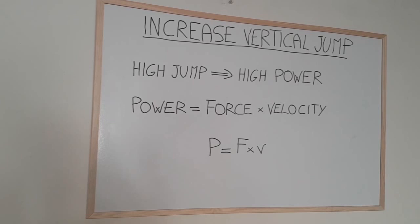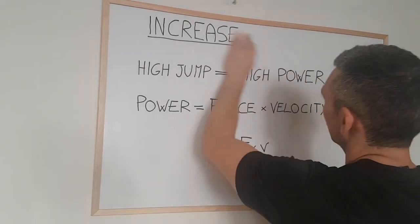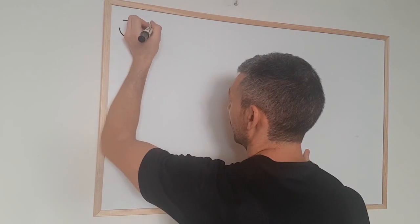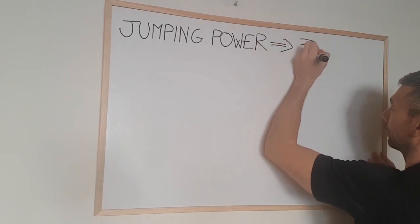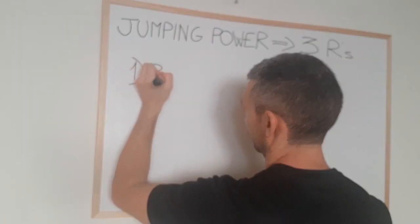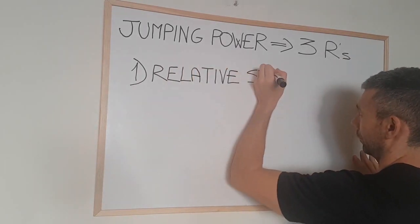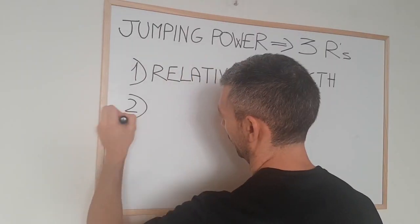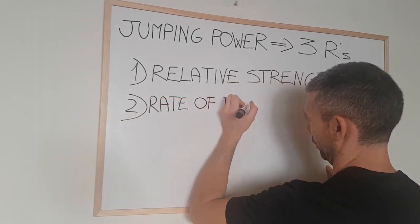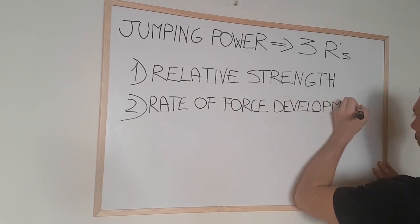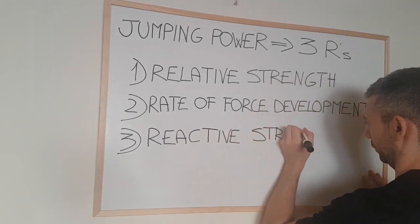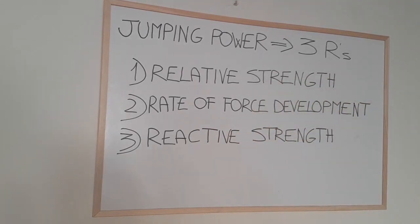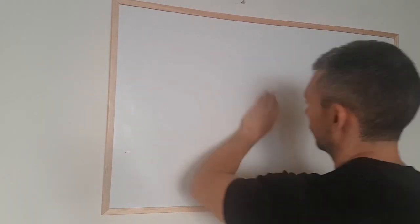So to generate power, not only do we need to be strong but we need to be fast too. Power in relation to jumping is determined by three factors, or the three R's as I like to call them. First, relative strength — strength compared to body weight. Second, rate of force development — the rate at which force is produced, which depends on the ability of the central nervous system to fire more motor units at once. And third, reactive strength — the ability of muscles and tendons to absorb elastic energy and quickly convert it to kinetic energy. Let's analyze each of these elements separately.